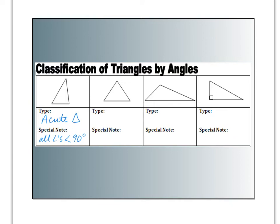The second type of triangle, if we're classifying by its angles, we technically should put marks in here to show that all three angles are the same size. This is a word you maybe don't know yet — this is equiangular. An equiangular triangle, where all angles are congruent, or in other words all angles are the same size.